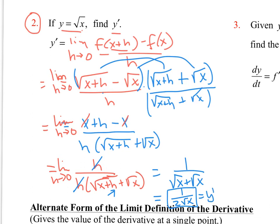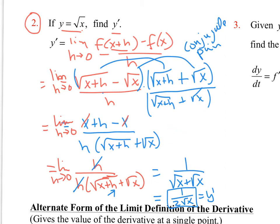With radicals, multiply by the conjugate pair — that will get rid of your radicals and then you can simplify. Don't distribute at this point because it just makes things messier; just leave it simplified.